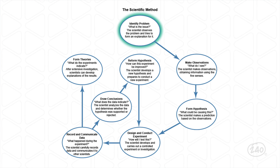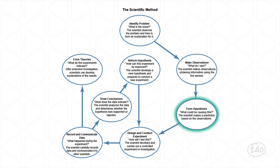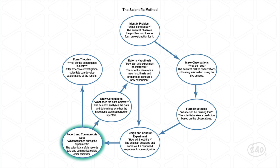Step one: the scientist identifies the problem and attempts to explain it. Step two: the scientist makes observations, recording information gathered using the five senses. Step three: the scientist forms a hypothesis, or a testable prediction based on the observations. Step four: the scientist tests the hypothesis in an investigation or an experiment. In an experiment, the scientist will have a control group — a group that does not receive the experimental treatment — and an experimental group, a group that does. Step five: the scientist records and communicates their data, their measurements and their observations taken during the experiment.